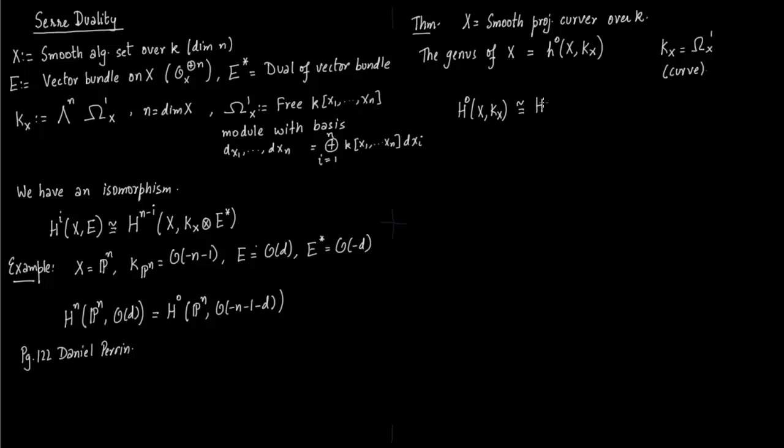So notice that you can use Serre duality here. Instead of e you are putting in kx, and you are taking i as 0 and n as 1. kx tensor with kx star will just give you O because kx itself is a line bundle. So now you just take dimension of both sides, and we have defined genus to be h1. So that proves our result.